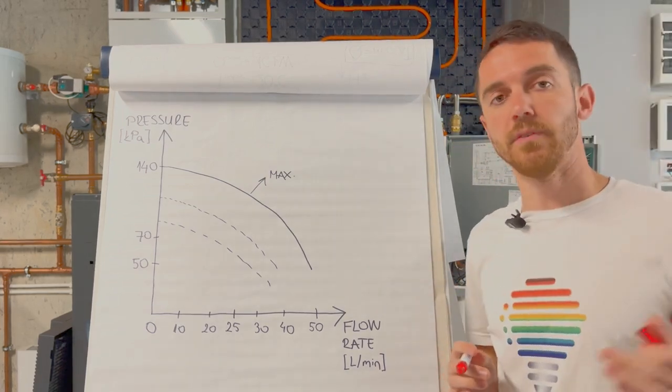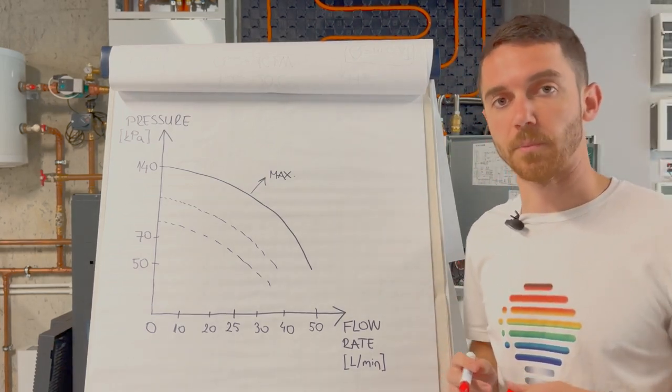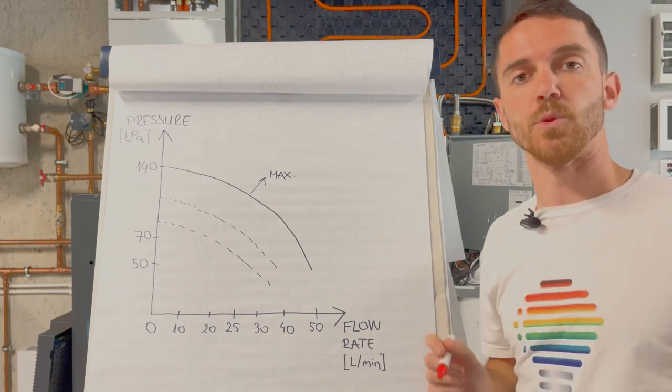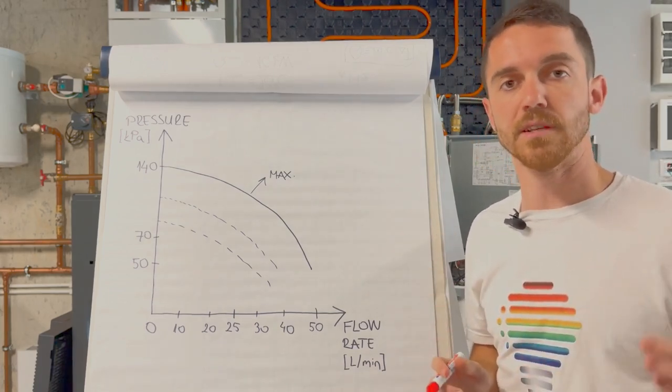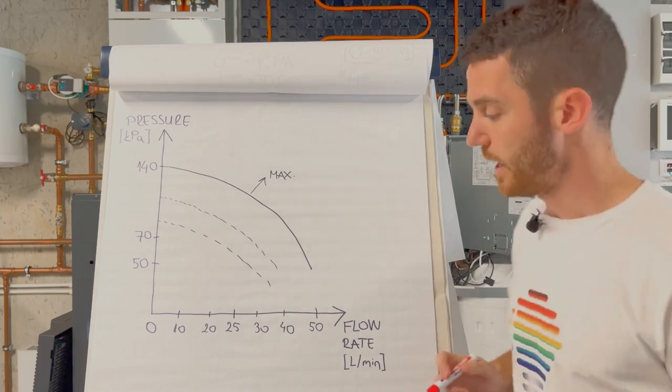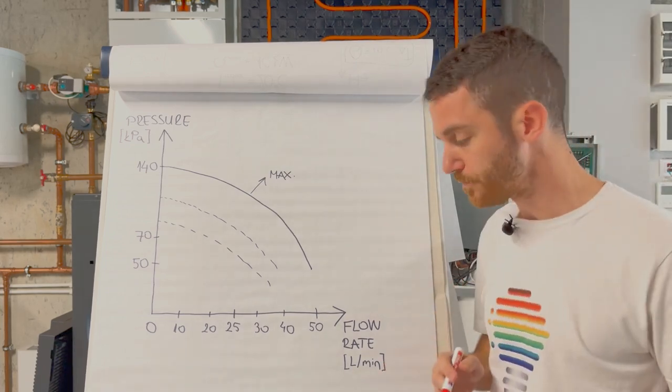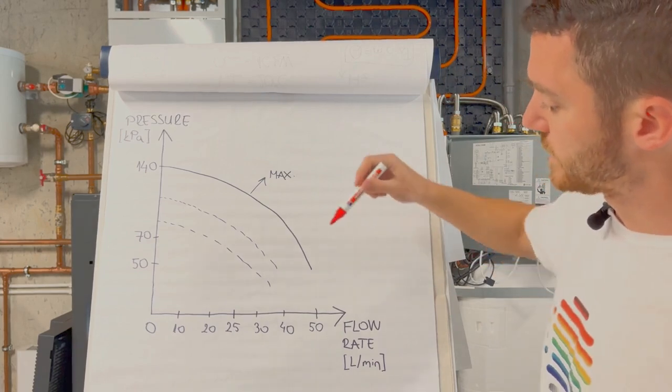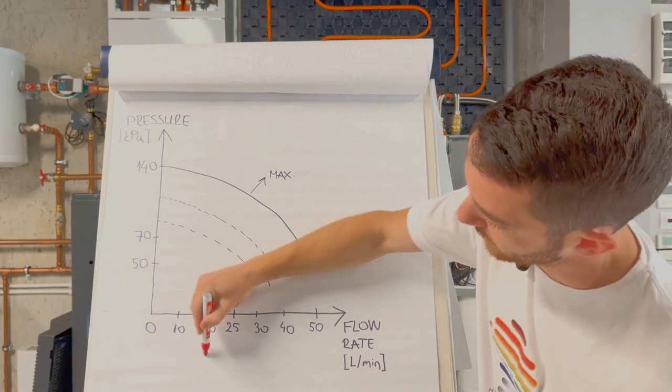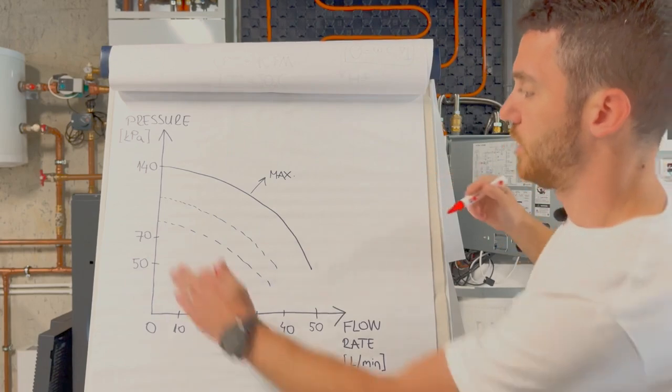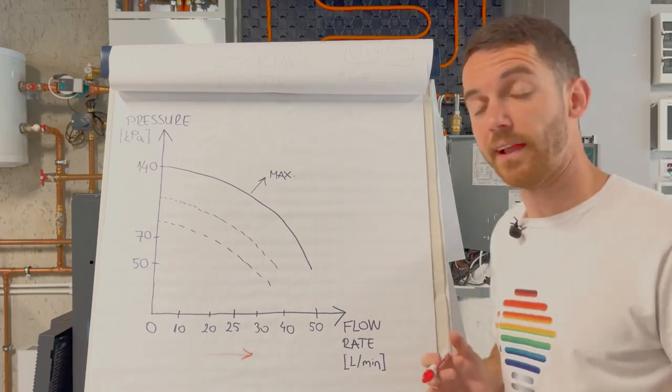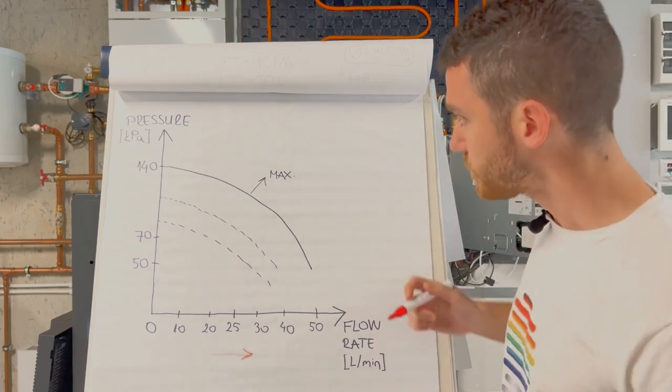Here you will see pump curve for Panasonic circulator pump. On one axis you will see pressure, pressure drop, usually in kilopascals or millibars or height in meters, but we will focus on kilopascals. And on other axis you have flow rate. Here you will see pump curve, how flow rate is going higher.